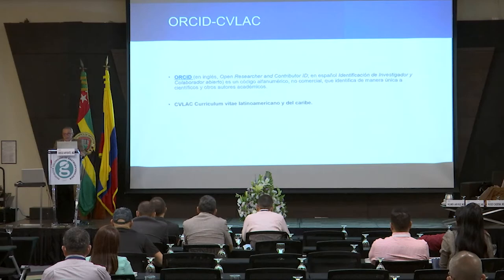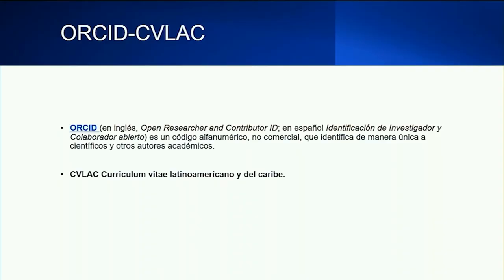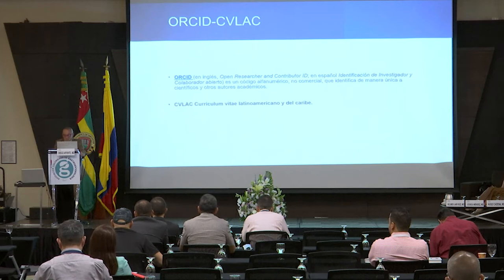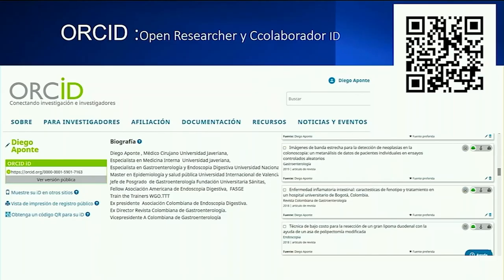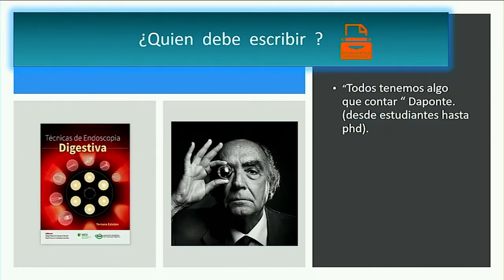Es importante también que tengan su hoja de vida. Hoy en día deberíamos todos tener nuestra hoja de vida de investigador en ORCID y en CVLac. Ya la mayoría de las revistas mundiales solicitan el ORCID y las latinoamericanas el CVLac, incluyendo nuestra revista, que ya se empezó a hacer obligatorio. Da hasta la posibilidad de tener el código QR para que en tu tarjeta la gente sepa quién eres, tu hoja de vida y todas las publicaciones y características como investigador. Pero entonces la primera pregunta: ¿quién debería escribir? Y ahí me voy a una frase que yo digo permanentemente: todos tenemos algo que contar.